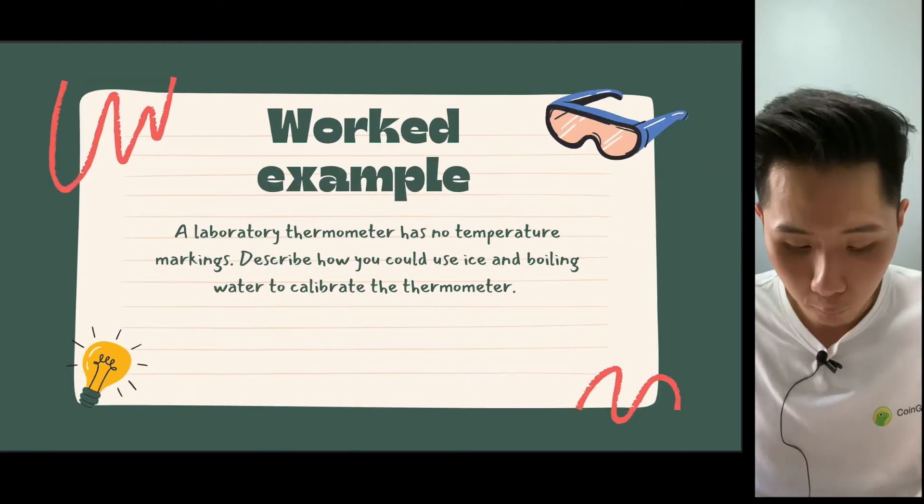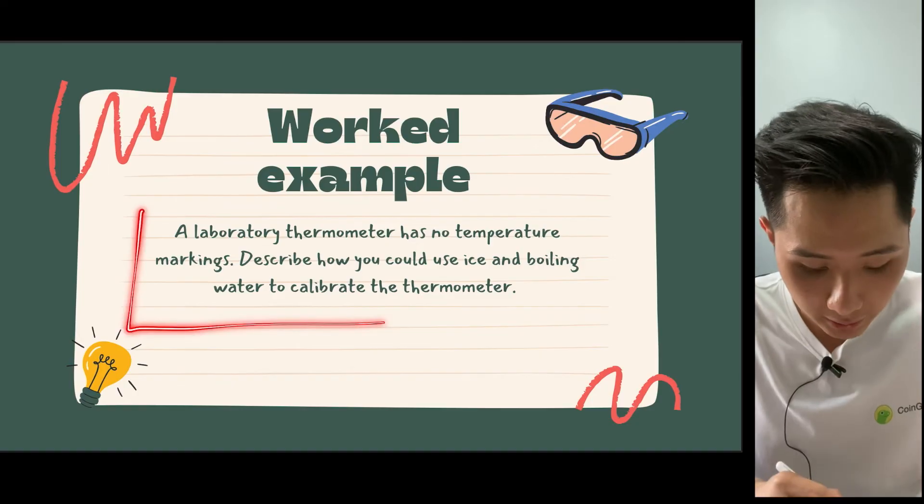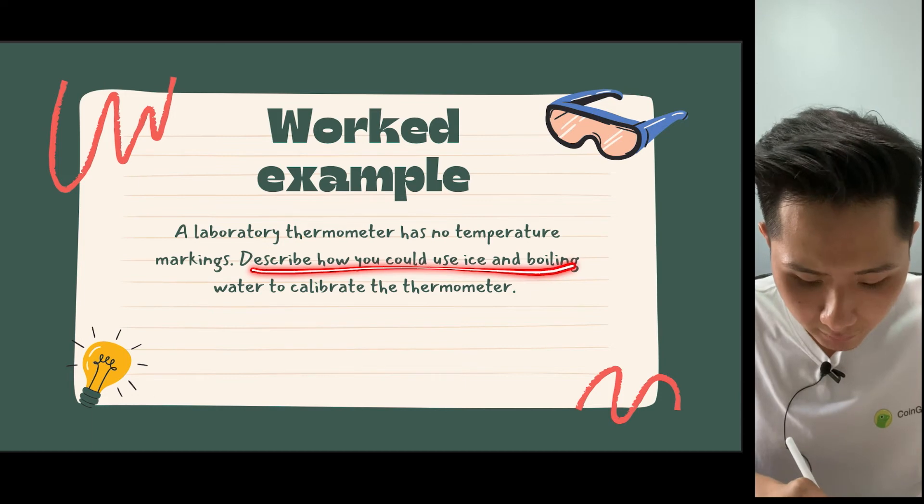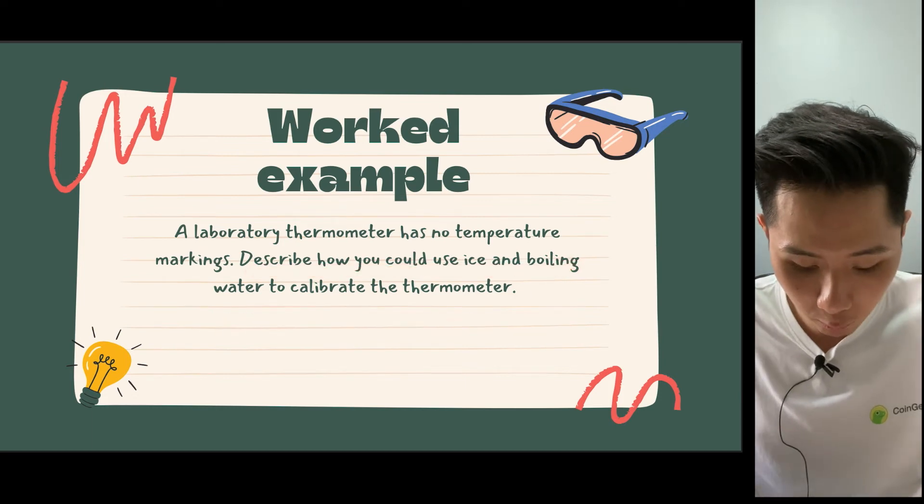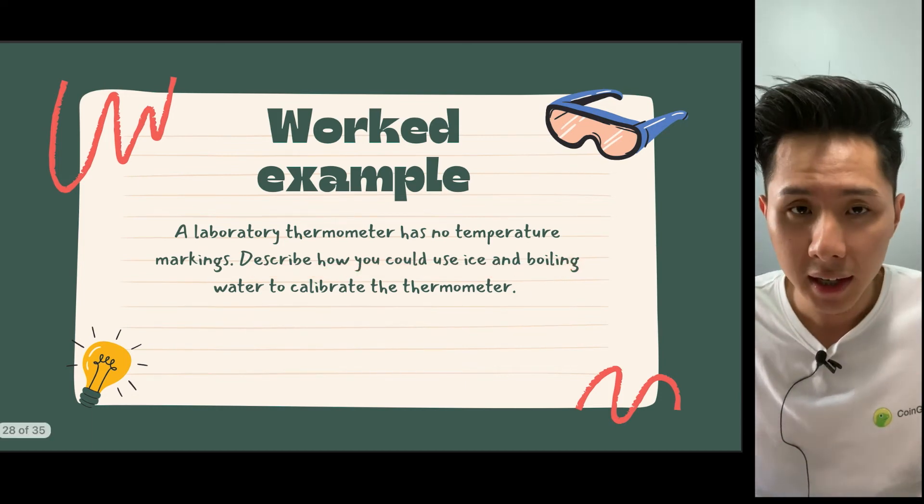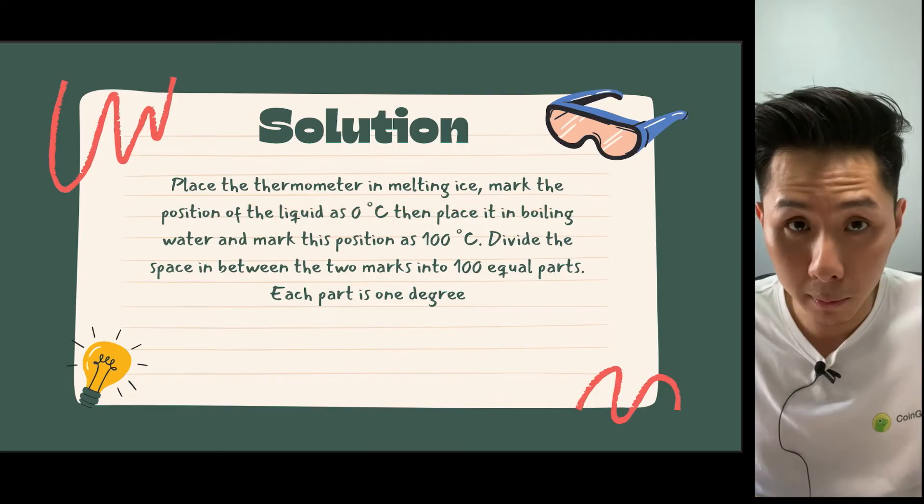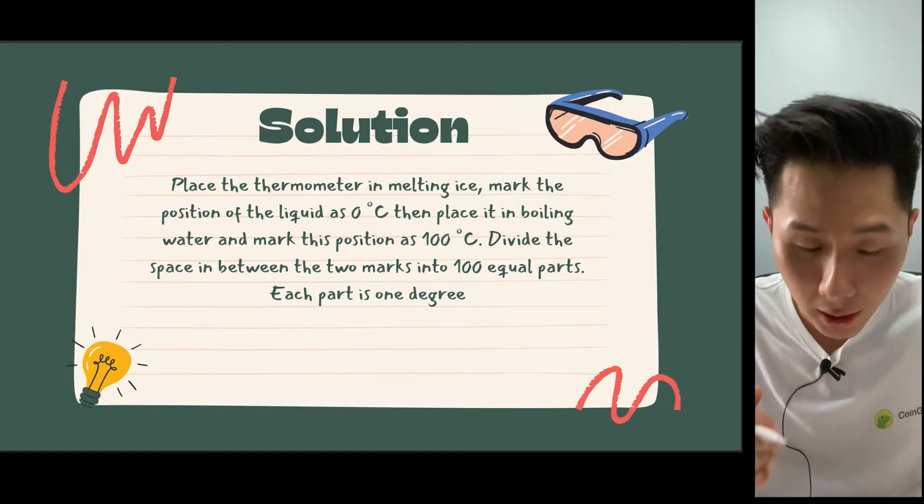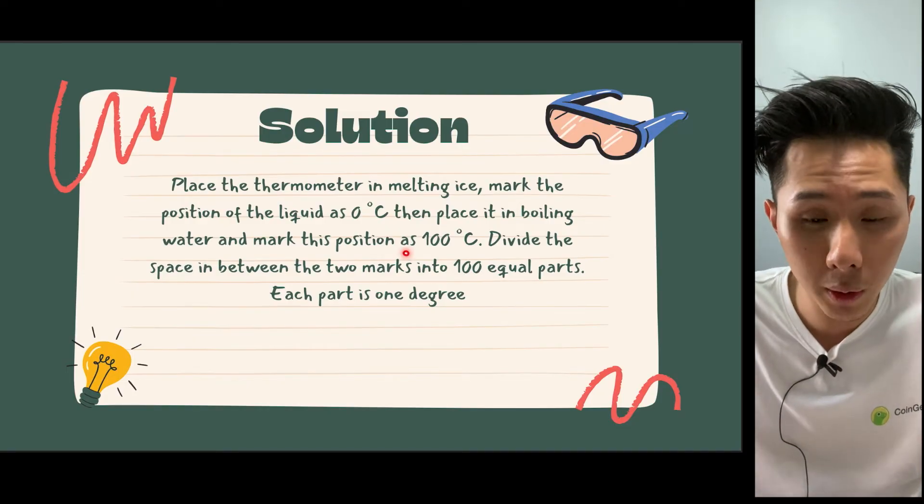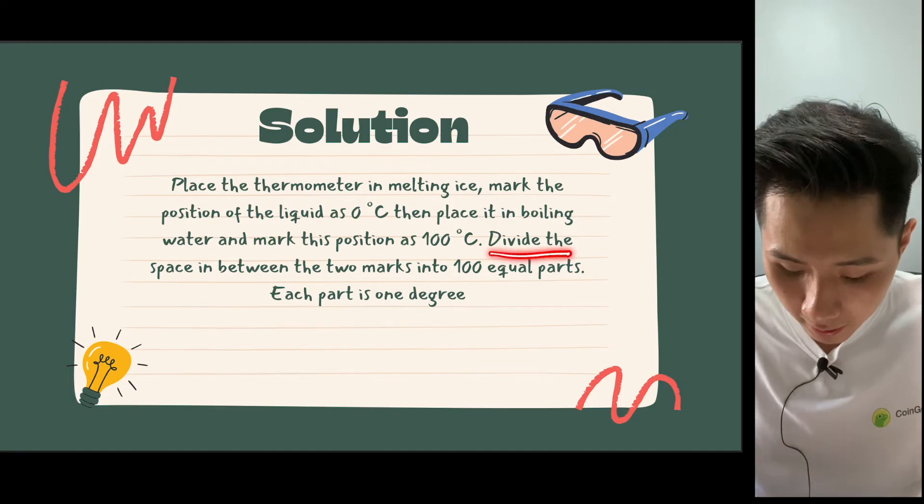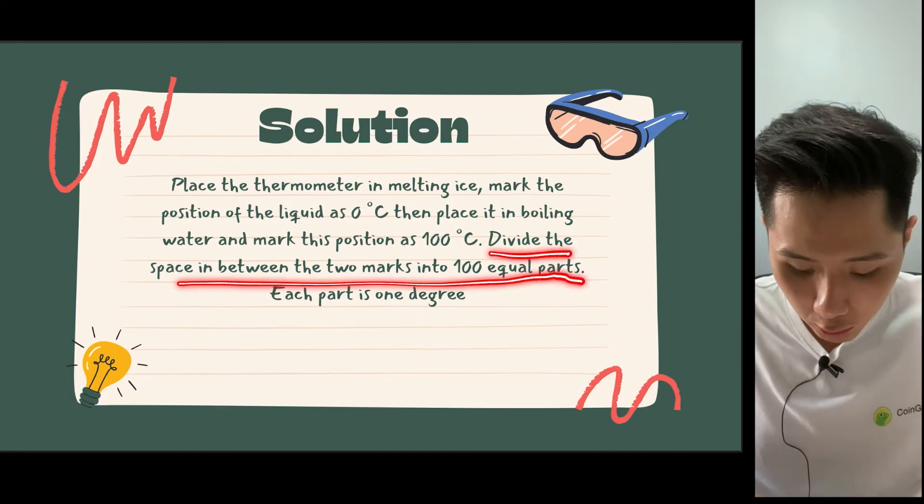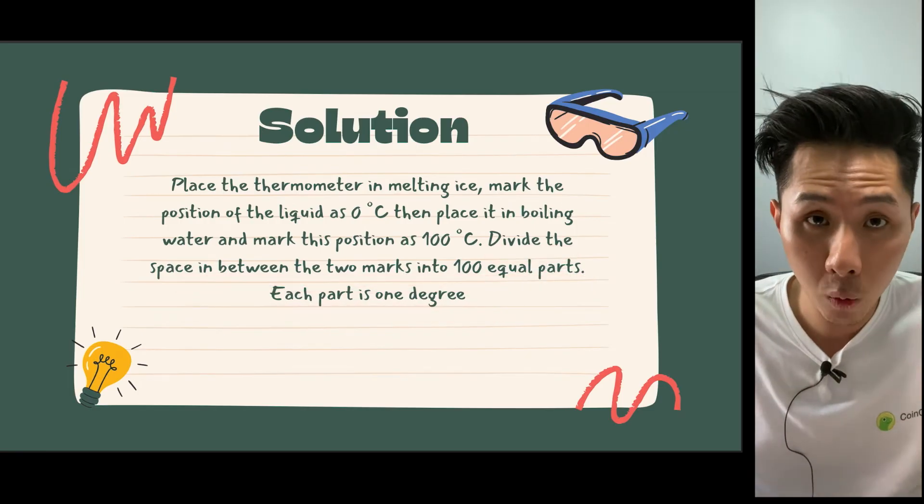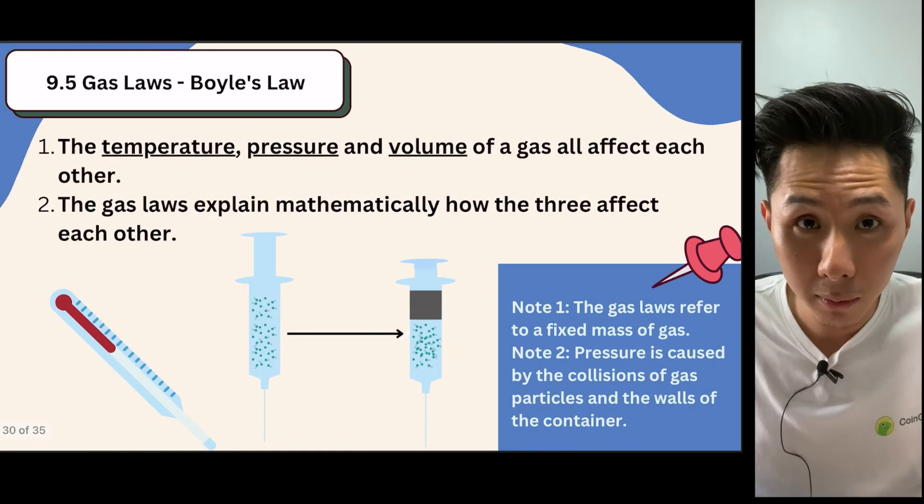So the next question, which is the same as what we just talked about. A lab thermometer has no temperature marking, which means it doesn't work. Describe how you could use ice and boiling water to calibrate the thermometer. And what you can do is just put the thermometer into melting ice, then mark it as zero. And then put the thermometer again into boiling water, and mark a point at 100 degrees Celsius, and divide the space in between two marks into 100 equal parts. Each part will then be equal to 1 degree Celsius. And that's all about it.